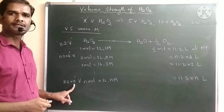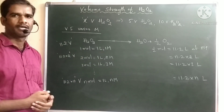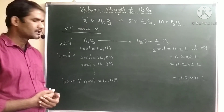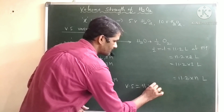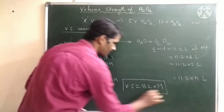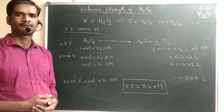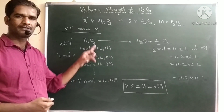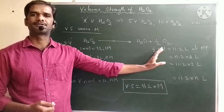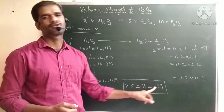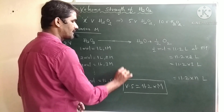Here N is the molarity — 1 molar, 2 molar, 3 molar, up to N molar. So if you take M molar solution, the resultant volume strength is 11.2 times its molarity. Volume strength of H2O2 = 11.2 × M, where M is the molarity. This is the relation between volume strength and molarity.